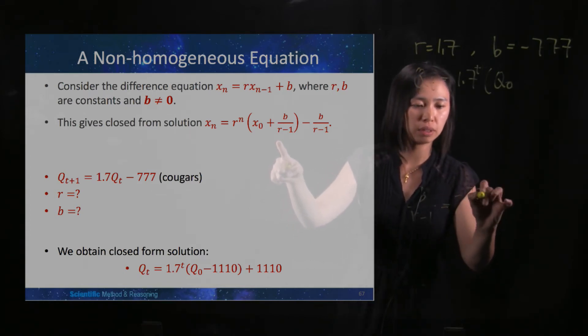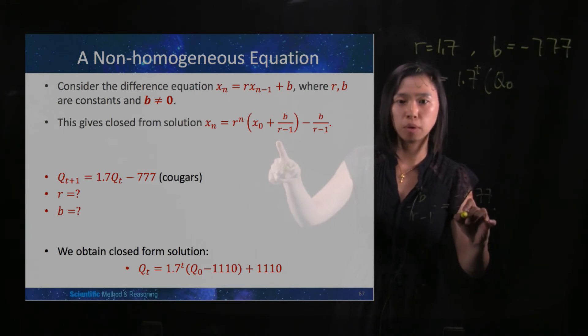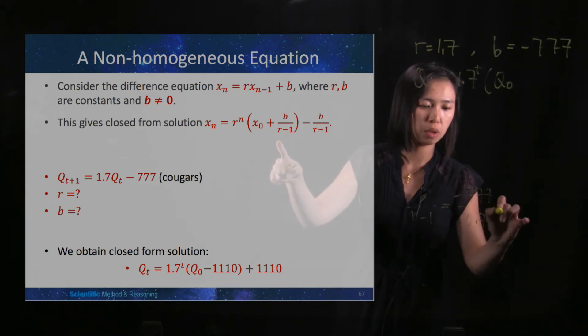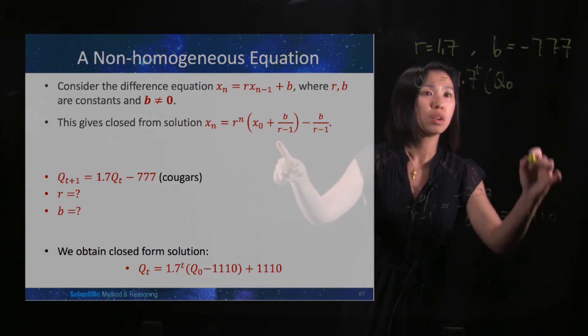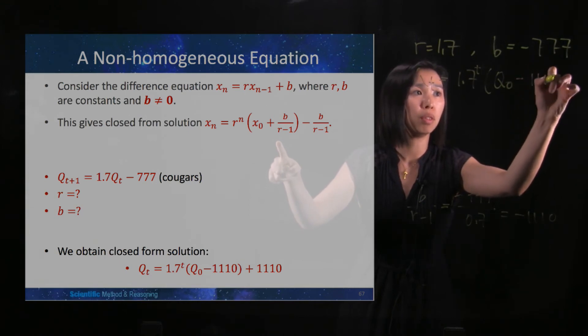Your b is negative 777, so divided by 1.7 minus 1 is 0.7, which is negative 1110. So here you will have negative 1110. All right.